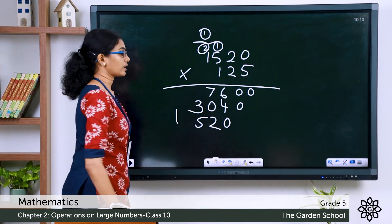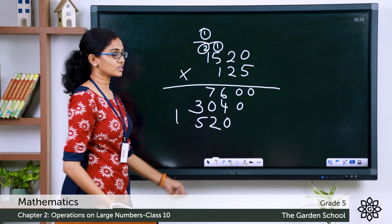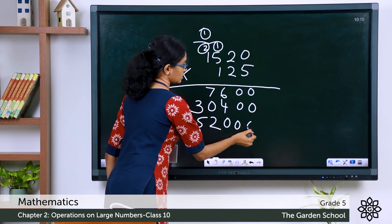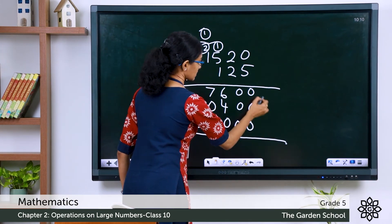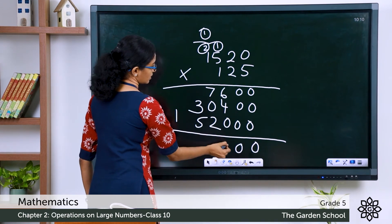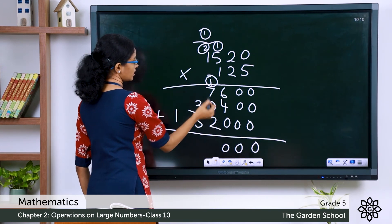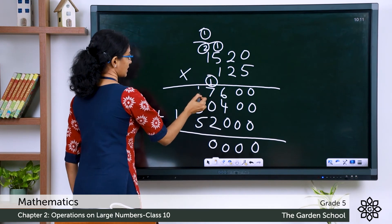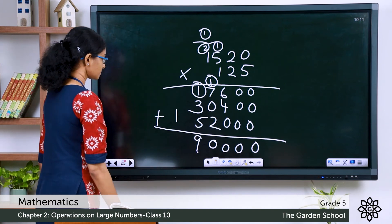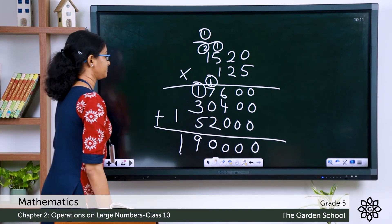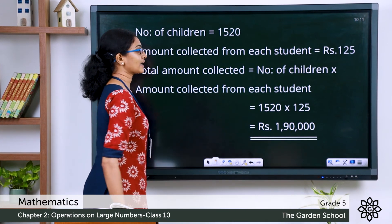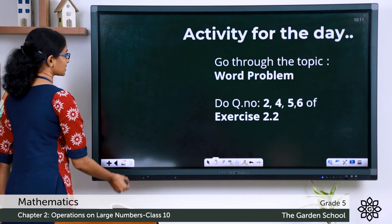Now multiply by the hundreds digit 1: 1 × 0 = 0, 1 × 2 = 2, 1 × 5 = 5, 1 × 1 = 1. Third partial product: 1520. Insert zeros as placeholders to make up the correct place values. Now add the three partial products: the final total amount collected is equal to rupees 1,90,000.